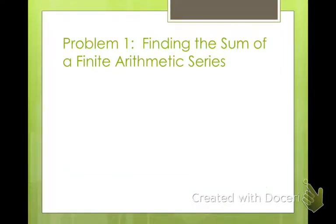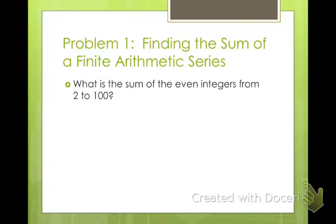Finding the sum of a finite arithmetic series. We're going to use that formula we just learned. What is the sum of the even integers from 2 to 100? First we need to ask ourselves, I'm looking at even integers. My integers are 2, 4, 6, 8, 10, 12 all the way to 100. How many terms is that going to be? If we have all the even numbers from 1 through 100, we have 50.